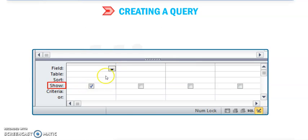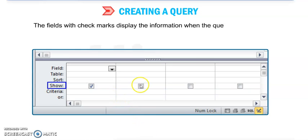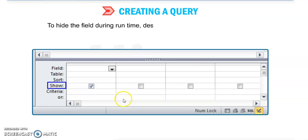Now next is Show. The Show row displays a check mark. If you want to show that field or you want to format it, you can put the check mark over here. The field with check mark displays the information when the query is being run. And to hide the field during run time, deselect the check mark by clicking on it.